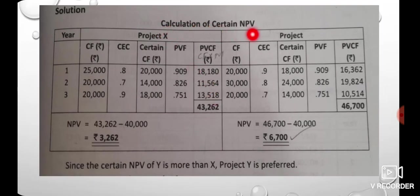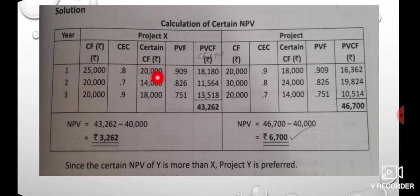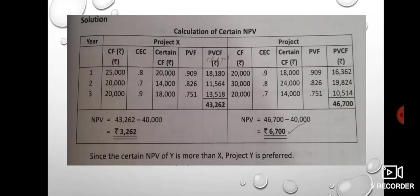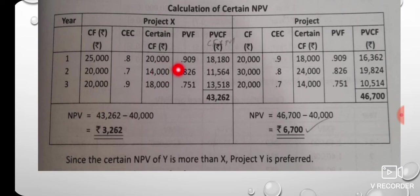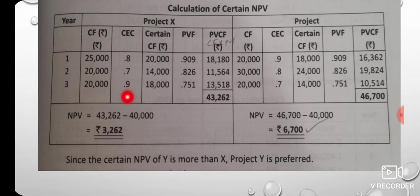The heading is: Calculation of Certain Net Present Value. The table has columns for year, Project X and Project Y, with cash flows, certainty equivalent factor of 0.8, and present value factors at 10% cost of capital — including values 1.909 and 2.909.